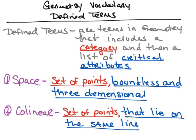Another example is collinear. The definition of collinear is it's a set of points that lie on the same line. There are two parts here. The first part — a set of points — is the category or classification. The second part — that it lies on the same line — is the critical attributes. So if I had a line here and two points on that line, we would call these two points collinear because they're on the same line. We use capital letters for points, so I would have point A and point B.